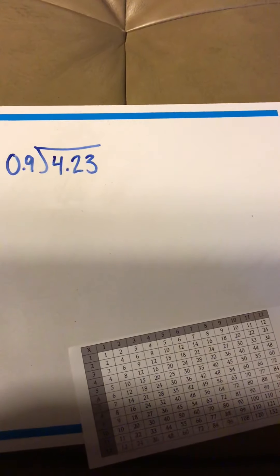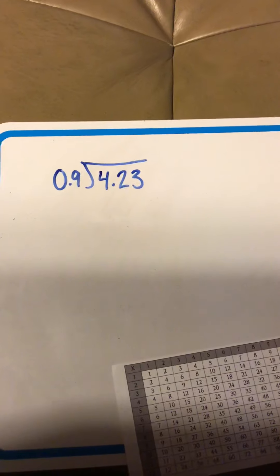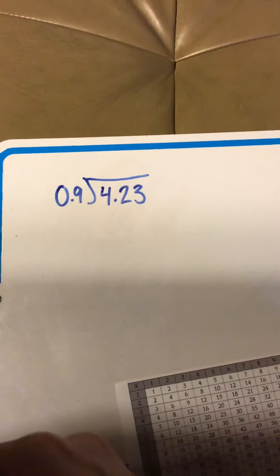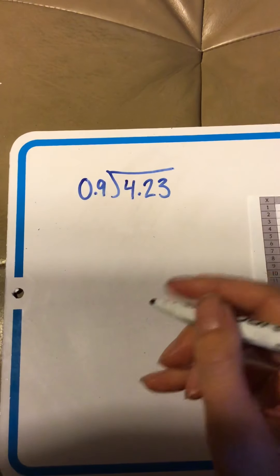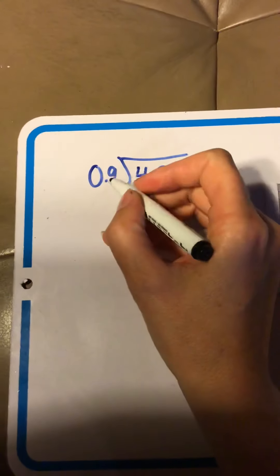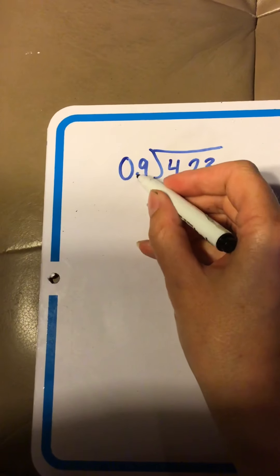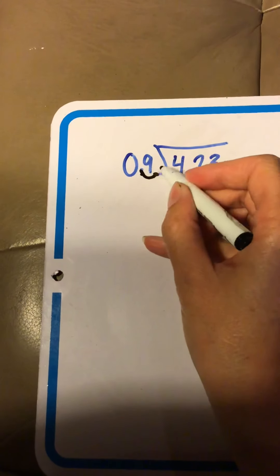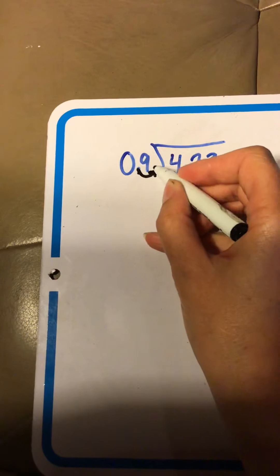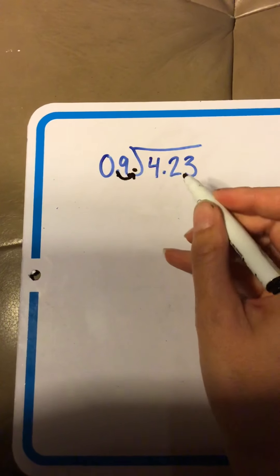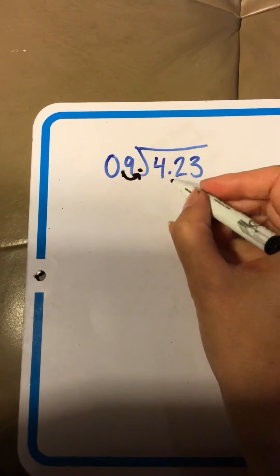Okay, so I have 4.23 cookies, and I have 0.9 friends who would like to share them. Okay, first thing we've got to do, we've got to get that decimal out of the way at the door. Yuck, we don't know what to do with you. So, we're going to move you over, hop you over one spot, which means we also have to hop inside the house.